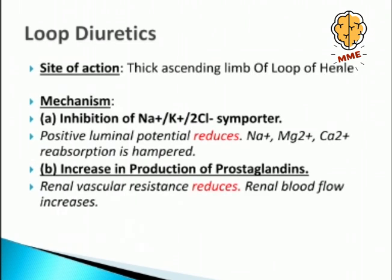The site of action for loop diuretics is the thick ascending limb of the loop of Henle. They have two mechanisms of action. First is inhibition of the sodium-potassium-2-chloride (NK2Cl) co-transporter, which causes reduction in positive luminal potential. Positive luminal potential normally helps in reabsorption of sodium, magnesium, and calcium, so its reduction hampers reabsorption of these ions. Second is increased production of prostaglandins — since prostaglandins are vasodilators, renal vascular resistance reduces and renal blood flow increases.